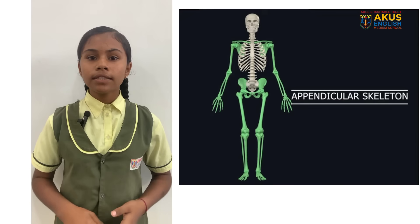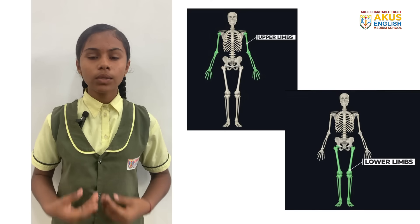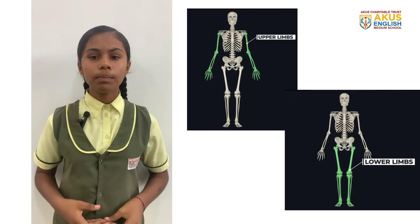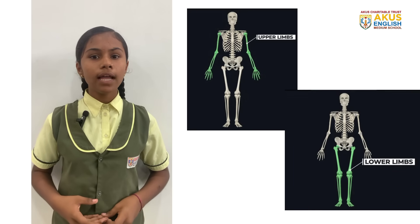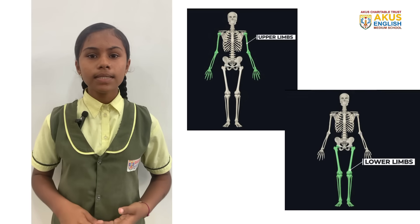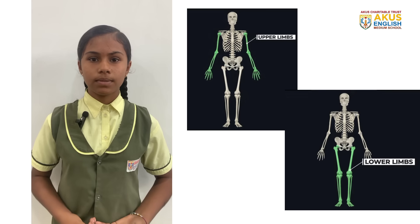The appendicular skeletal system: the human body has two arms and two legs. Different parts of the legs and arms have several bones, connected together by joints.